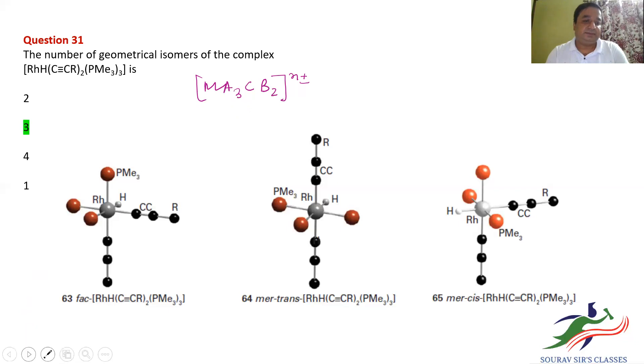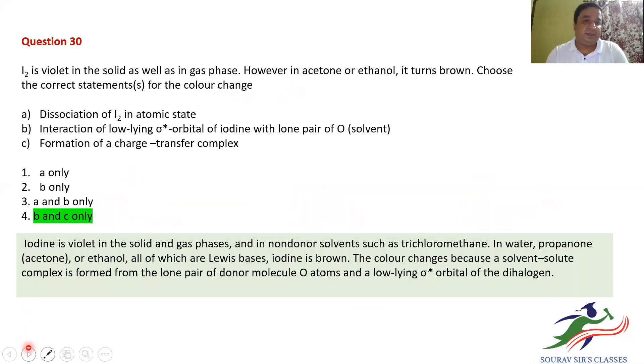Next. Another question that has been directly asked from Atkins. You can also consult for a better explanation. I think Miessler also has a beautiful explanation over this particular thing. Here, I₂ is violet in the solid as well as in gas phase. However, in acetone or ethanol, it turns brown. Choose the correct statements for the color change. I've already mentioned that B and C are the answers. Why it is so, I'm going to explain.